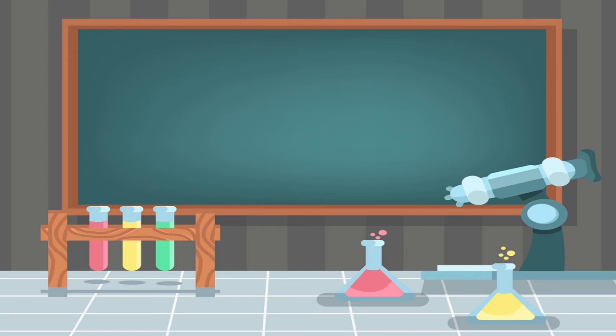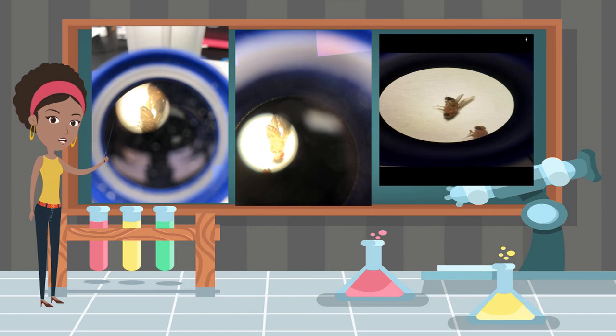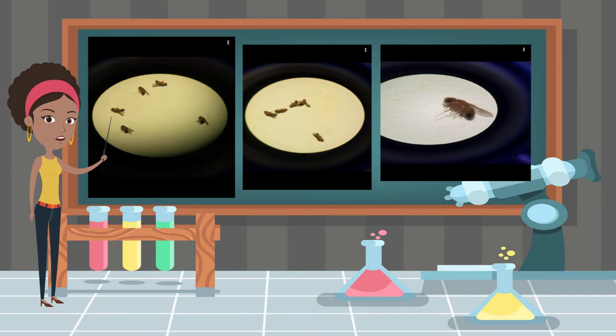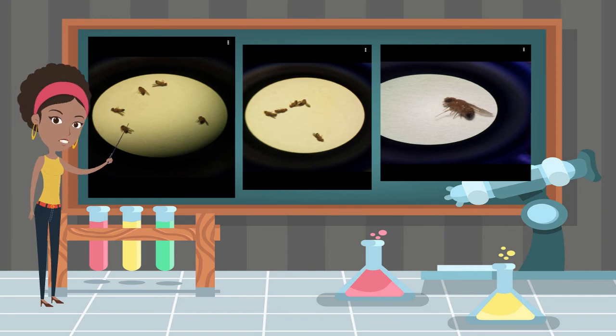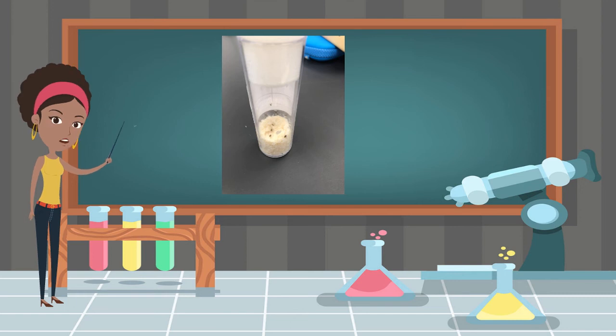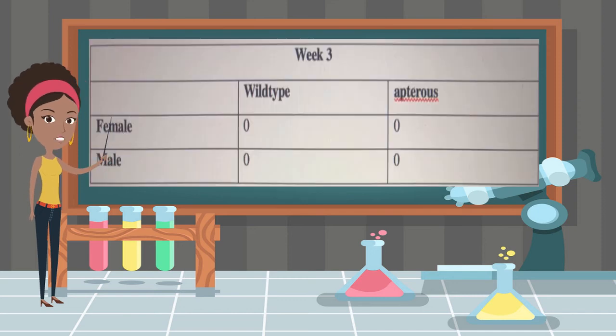These are the results for week one. Shown are fruit flies under a microscope. Week one continued. Picture of week two vial. Week three results. Zero female apterous and wild type. Zero male apterous and wild type. The vial during week three.